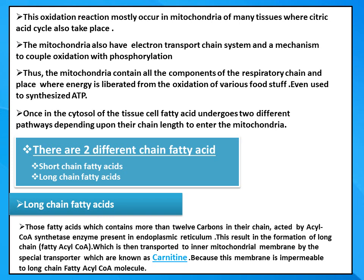This oxidation reaction mostly occurs in the mitochondria of many tissues, where the citric acid cycle also takes place. The mitochondria also have the electron transport chain system and a mechanism to couple oxidation with phosphorylation. Thus the mitochondria contain all the components of the respiratory chain and are the place where energy liberated from the oxidation of various food stuffs is used to synthesize ATP.